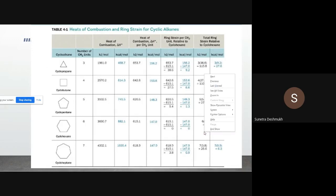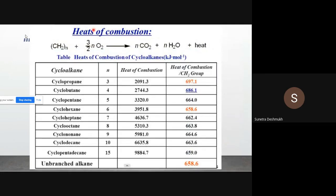Here is another table with heat of combustion values. When a cycloalkane — for example cyclohexane — undergoes combustion in air or oxygen, it produces carbon dioxide, water, and heat. We measure that heat to determine stability. Cyclopropane, cyclopentane, and cyclohexane values are listed. Cyclohexane is essentially strain-free, with a heat of combustion per CH₂ group of 658.6 kJ/mol, and this is the reference standard.